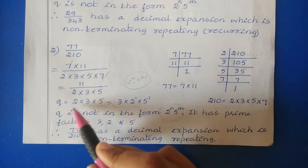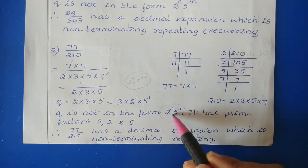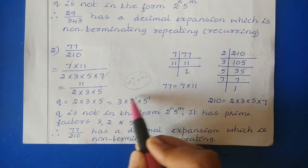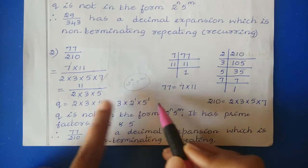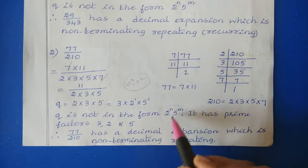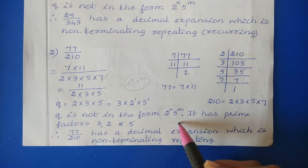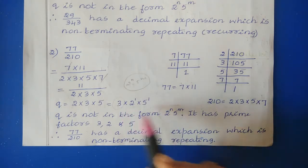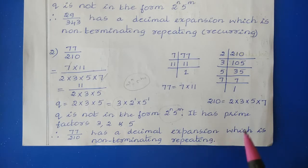So just by checking the q value — whether it is in the form 2 to the power n into 5 to the power m or not — we can determine whether a number has a non-terminating repeating decimal expansion. For instance, if q were just 2 to the power 1 into 5 to the power 1, that is in the required form and the decimal would be terminating. But here we have 3 as an extra factor, so 77 divided by 210 has a non-terminating repeating decimal expansion.